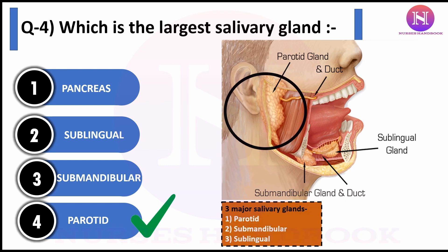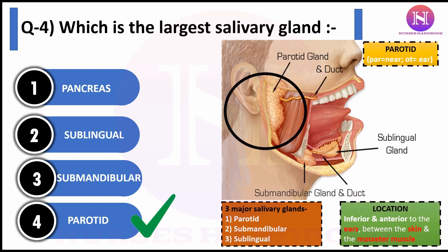The word parotid is derived from two Greek words which means 'beside the ear.' Parotid glands are located inferiorly and anteriorly to the ear, between the skin and the masseter muscle.